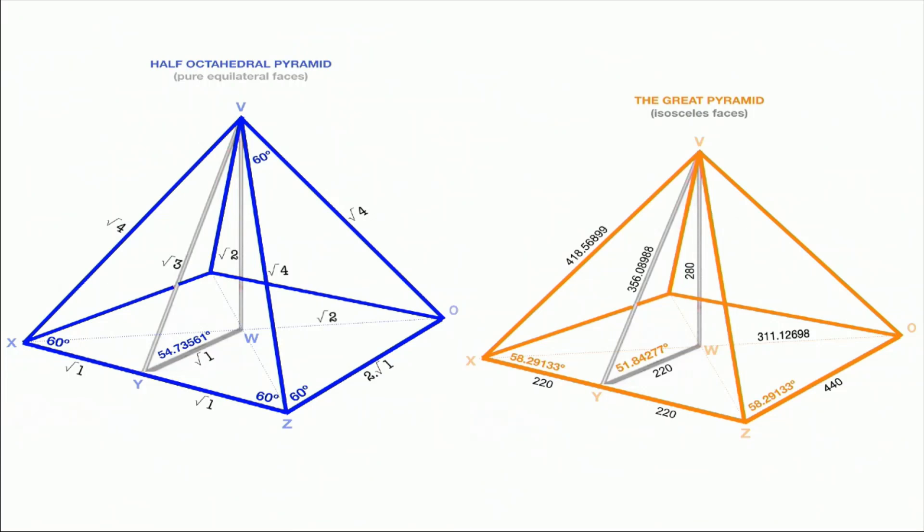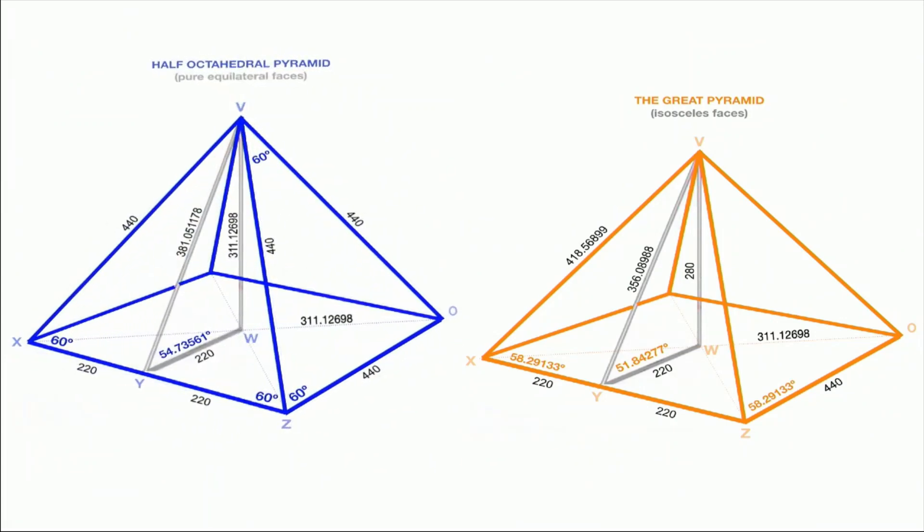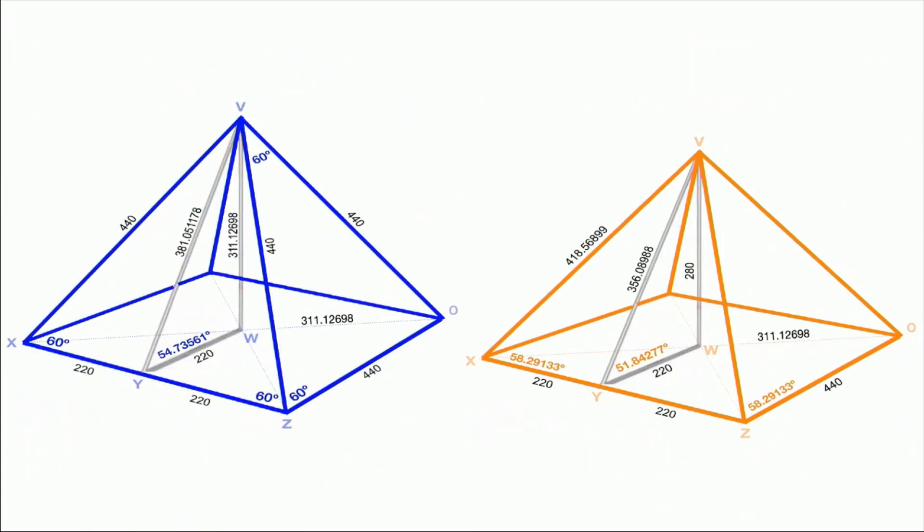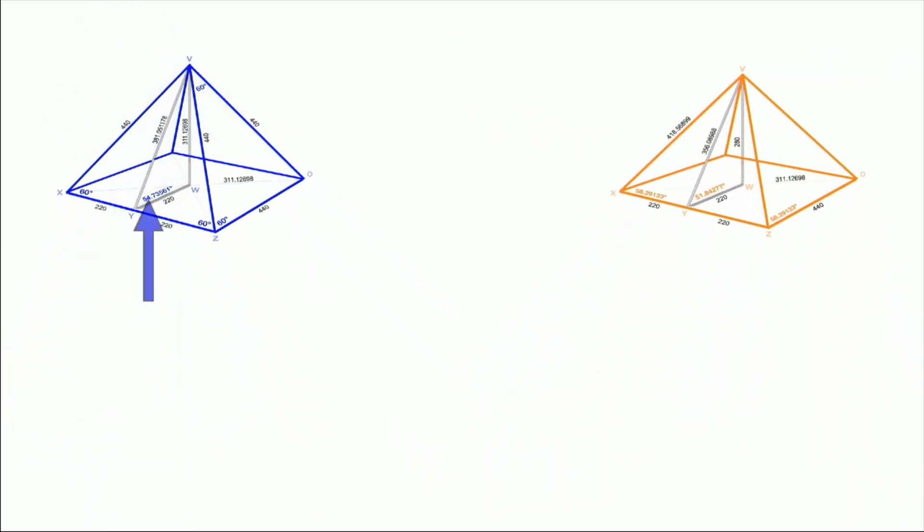When you think of it, it's not the perfect pyramid. The perfect pyramid would be the half octahedral. I looked at this—there's the actual values. Very quickly, you take that angle and this angle and compare the ratio.